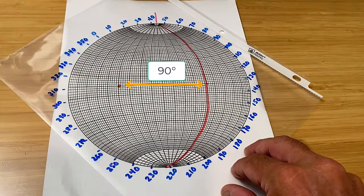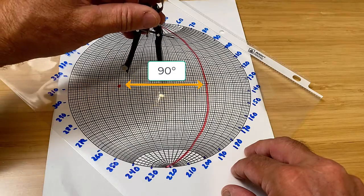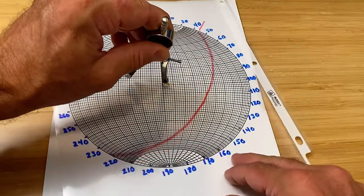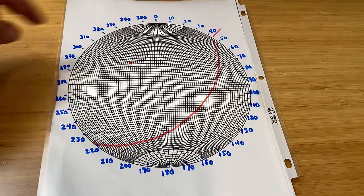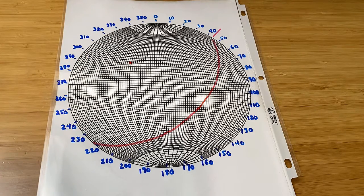That point is the pole to the plane of our bed. And when we again rotate the stereonet back to the zero degree position with north at the top, that dot represents the pole to the plane represented by that great circle.